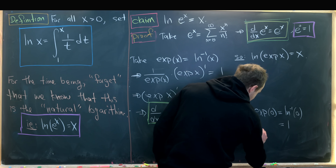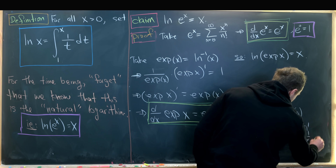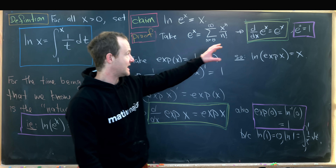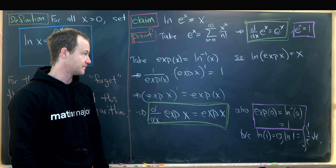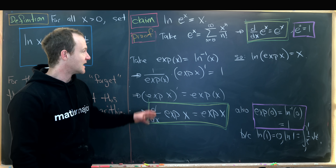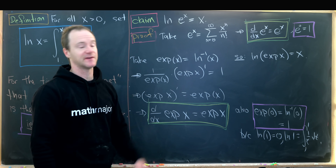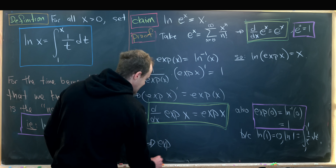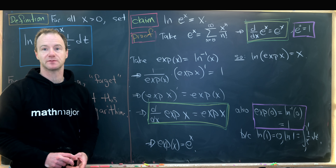We have e^x defined as the unique function satisfying the differential equation (d/dx)e^x = e^x with initial condition e^0 = 1. We've shown exp(x) — the inverse of our ln — satisfies the same differential equation and initial condition. By uniqueness of solutions to ODEs, they must be the same function: exp(x) = e^x. But that means our ln is the inverse of e^x, so ln(e^x) = x. That's exactly what we wanted to show.